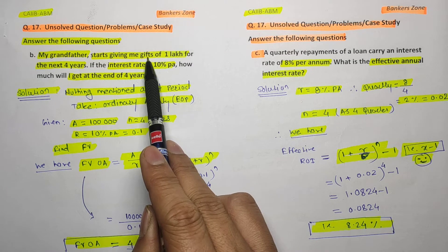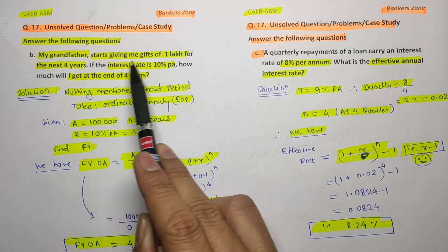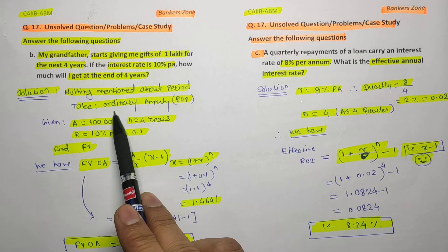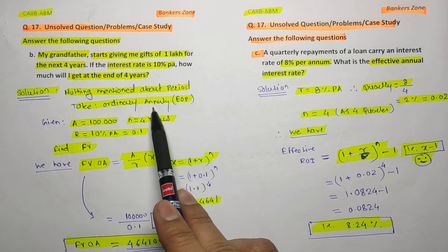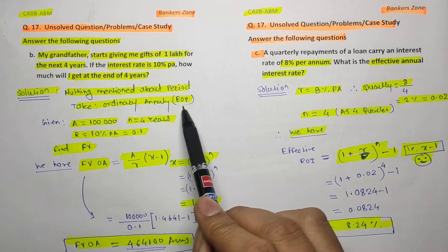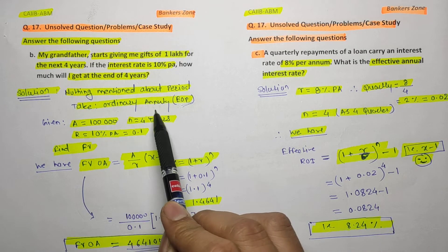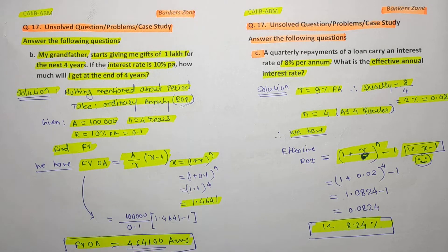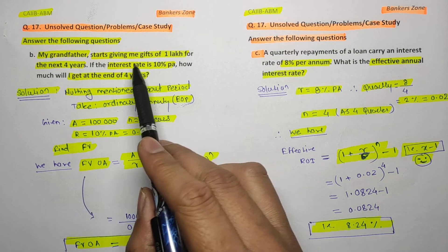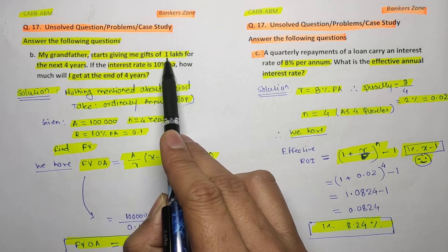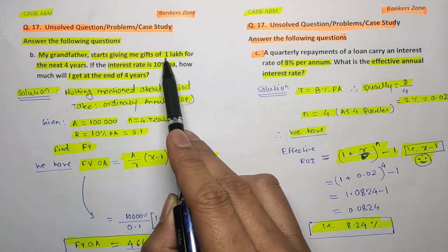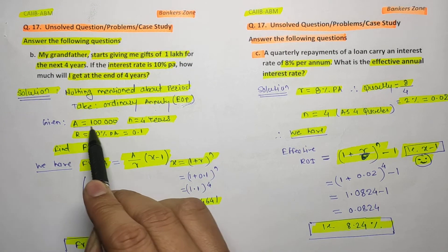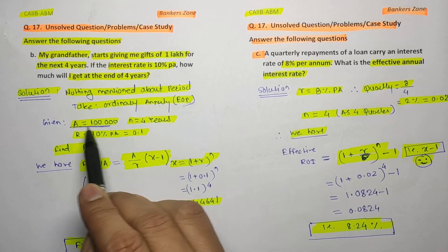Here, they have not mentioned whether my grandfather is giving me money at the beginning or end of the period. When nothing is mentioned, we take the ordinary annuity, which is always at the end of the period. So we assume cash flow is at the end of the period. My grandfather is giving me one lakh rupees continuously for four years — that is a constant cash flow, which is what annuity means. So A equals one lakh rupees and n equals four years.